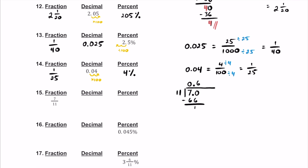That remainder is going to be 4. Let's add a 0 inside the house and bring it down. 11 times 3 is 33. If we subtract here, we're going to end up with a 7. Notice the 7 is what we started with — so it's going to keep repeating. So we know this is going to be 0.63, with 6 and 3 repeating. So as a decimal, write 0.63 repeater — make sure the bar is over both digits.